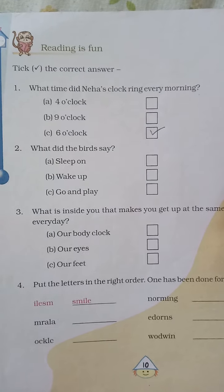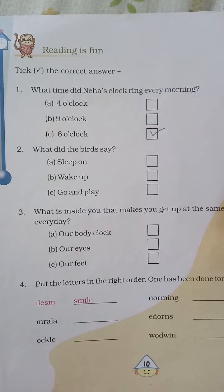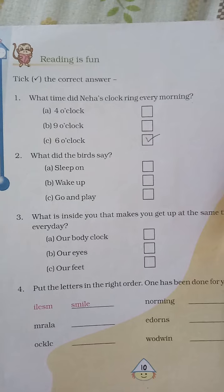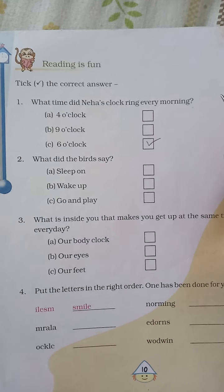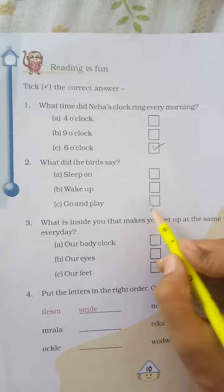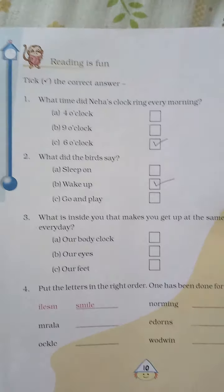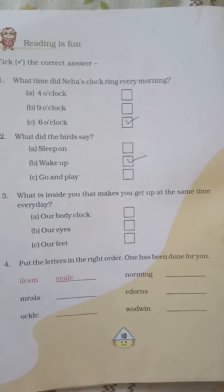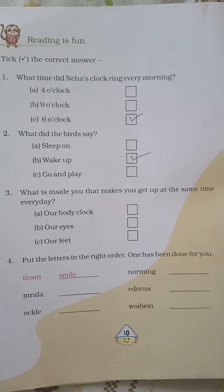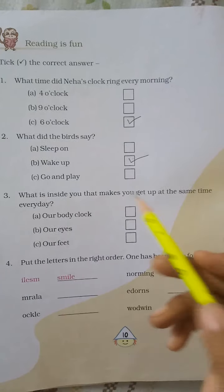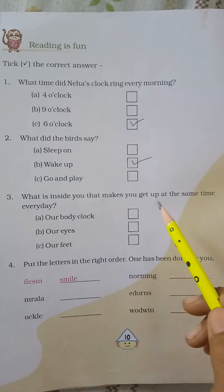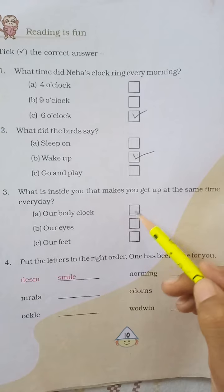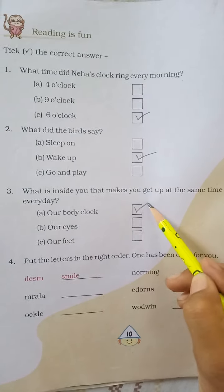What did the birds say? A. Sleep on. B. Wake up. C. Go and play. The answer is B — Wake up. What is inside you that makes you get up at the same time every day? Our body clock. Our eyes. Our feet. The answer is: our body clock.